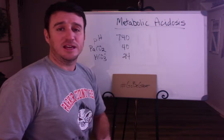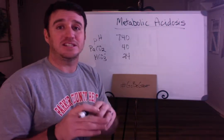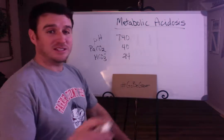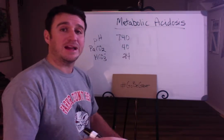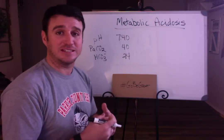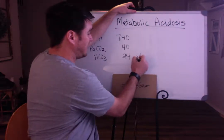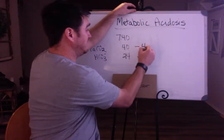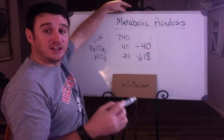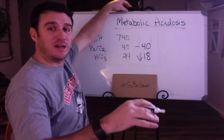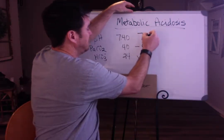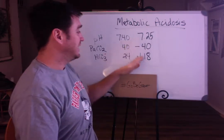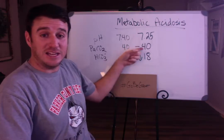By this point you understand that acidosis is anything that takes your pH less than 7.35. Since we're talking about metabolic acidosis, we're talking about bicarb. Bicarb pulls the pH in the same direction as it moves. So if bicarb goes down — let's say to 18 — and your CO2 initially stays normal at 40, then your pH will go down in the same direction as your bicarb, down to 7.25. The CO2 has stayed in the normal range while the bicarb has gone down.